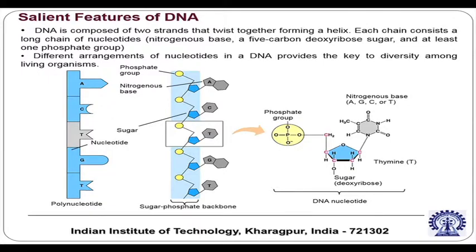If you look at a single DNA strand, you can see that a DNA strand has a phosphate group, shown by the yellow circles in this diagram. Then there is sugar, shown by the blue region, and each sugar is connected with one particular nitrogen-containing base like A, C, G, or T.